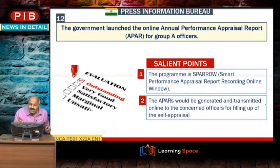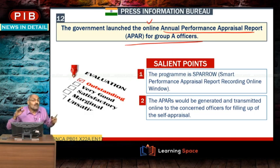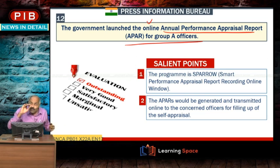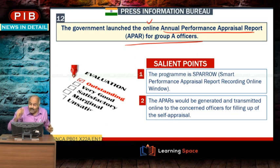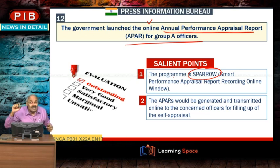The government launched online Annual Performance Appraisal Reports (APARs) for Group A officers. APARs will now be generated and transmitted online to concerned officers. The name of this programme is SPARO — the online annual performance appraisal report system for Group A officers.